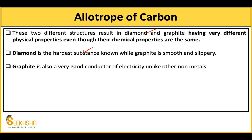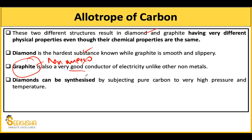Another property of graphite is that it is a very good conductor of electricity. Now, graphite is a non-metal, and generally non-metals are not good conductors of electricity — but graphite is an exception. Diamonds can also be synthesized — there are natural diamonds and you can also form synthetic diamonds.